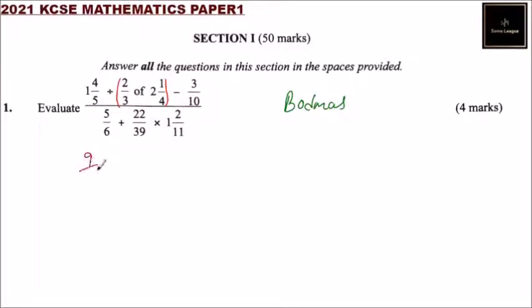You divide by, now this one, we say this is 2 over 3, you multiply by, we say this is 8 plus 1, 9 over 4, close the bracket, minus 3 over 10. So we will be able to work out what is inside the bracket. So we put the division sign.